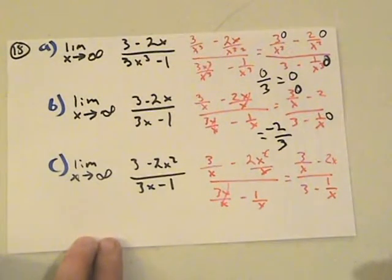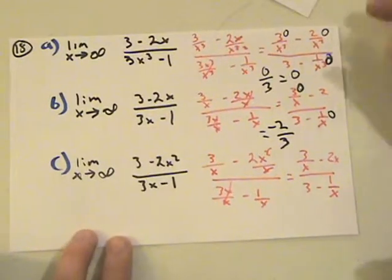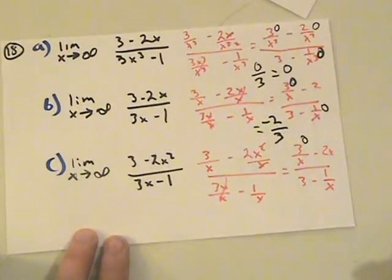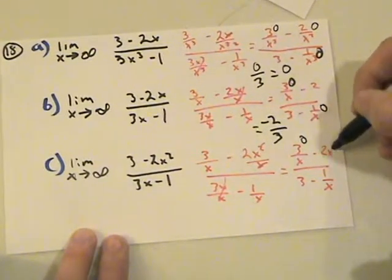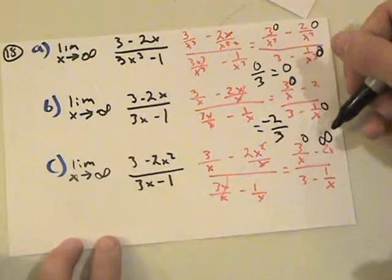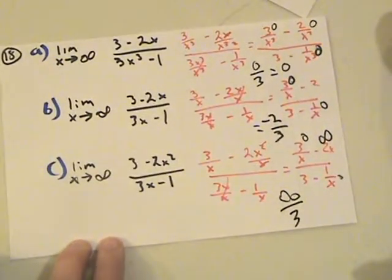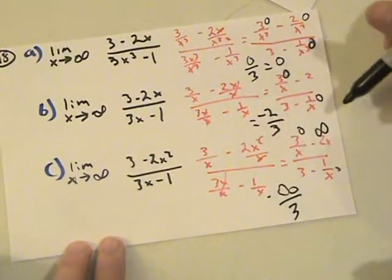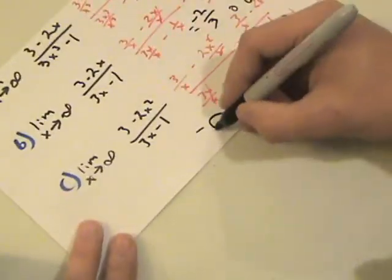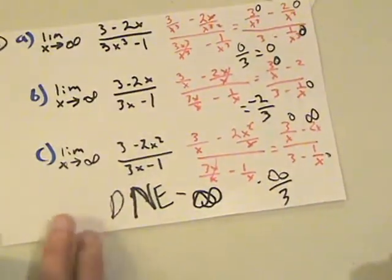For the last part of number 18, the guidelines tell us that if the degree of the numerator is greater than the denominator, the limit won't exist. Following it out, we don't have a constant over x to some exponent — it's multiplied — so this is going to equal infinity. The bottom is just 3, so it's negative infinity over 3, which equals negative infinity. That means the limit does not exist for this last part. That's number 18.